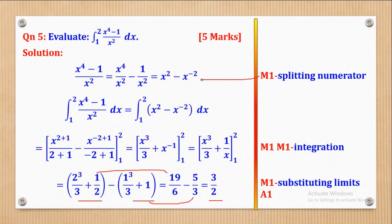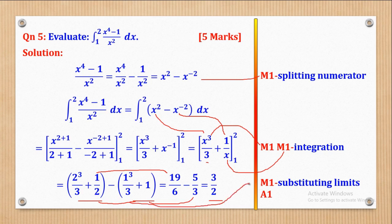For marking: the first mark (M1) is for splitting the numerator. The next M1 is for integrating the first term correctly, and another M1 for integrating the second term correctly — that gives 3 marks so far. The fourth M1 is for substituting the limits, and the final A1 is for the correct answer of 3/2. That is how the 5 marks are awarded — mark yourself and make corrections where you went wrong.